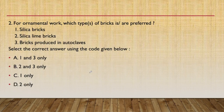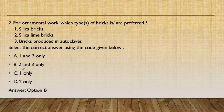Second question: for ornamental work, which type of brick is preferred? Options are silica brick, silica lime brick, and bricks produced in autoclaves. For ornamental or decorative purposes, the answer is option B (2, 1, 3) — silica lime brick and bricks produced in autoclaves. Silica bricks cannot be used for ornamental work.